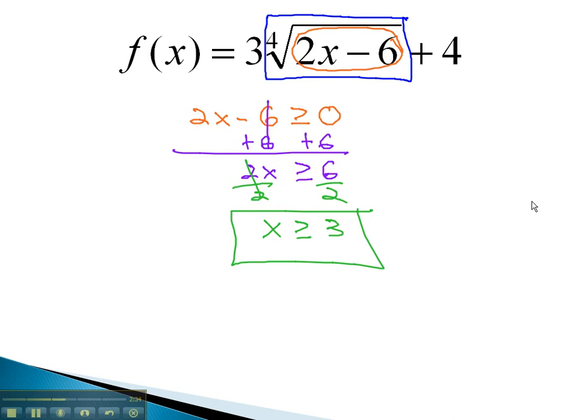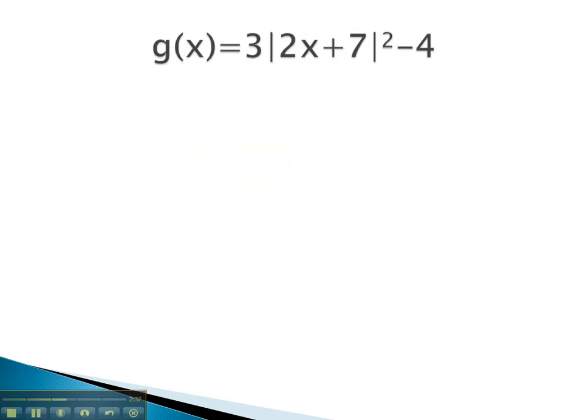Let's take a look at another example. In this problem, we have several things happening. But notice, as we look for restrictions on what happens, we can multiply any number by 2. We can add 7 to any number. We can take the absolute value of any number. We can also square any number. We can multiply anything by 3, and we can subtract 4 from anything. As we look through the operations in this function, there are no restrictions that are not allowed to occur.